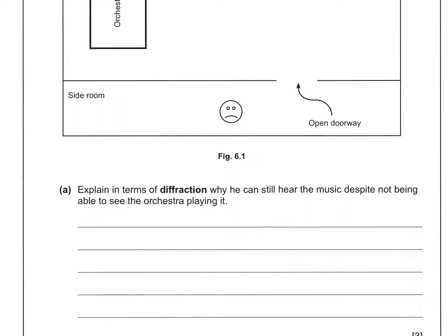Okay so the mark scheme says that what's going on here is that the wavelength belonging to the sound is much greater than the wavelength belonging to the light. Therefore the diffraction at the door is going to be greater for the bigger wavelengths and not significant for the tiny wavelengths associated with light. So the diffraction of the sound through the door is going to be much greater than the diffraction of the light.